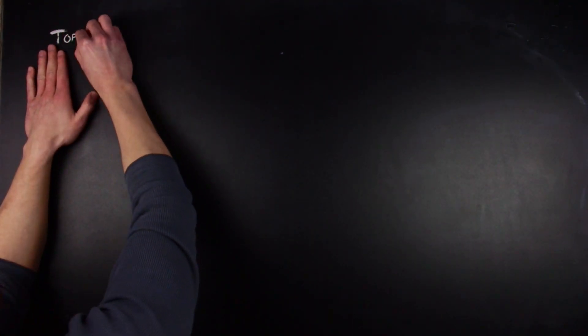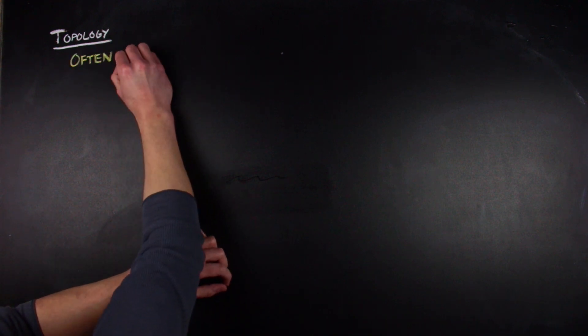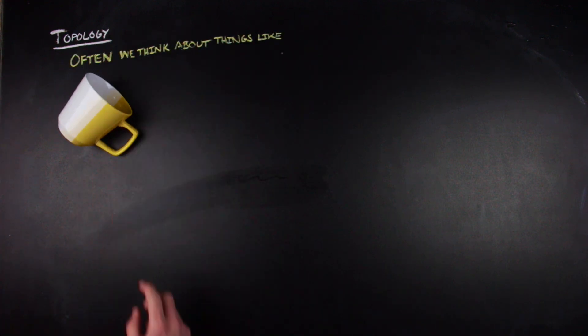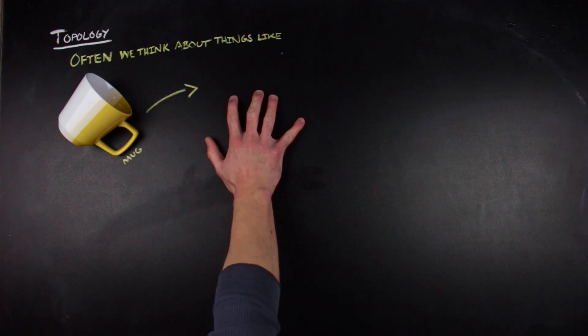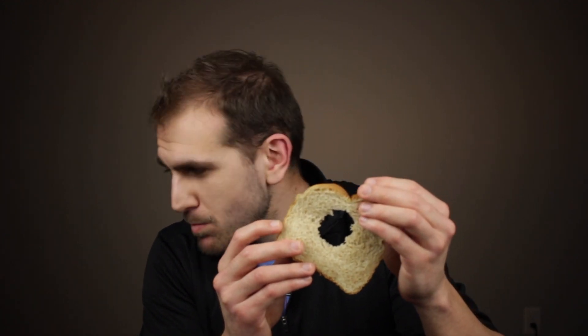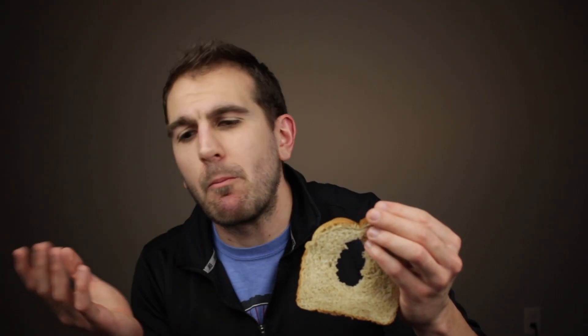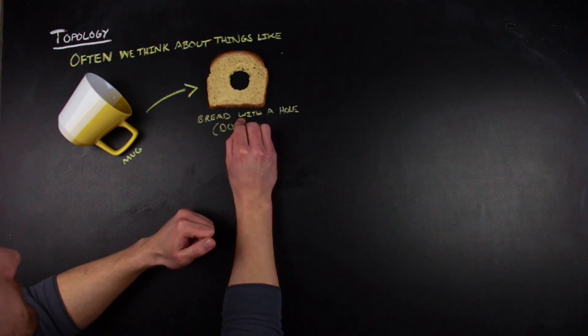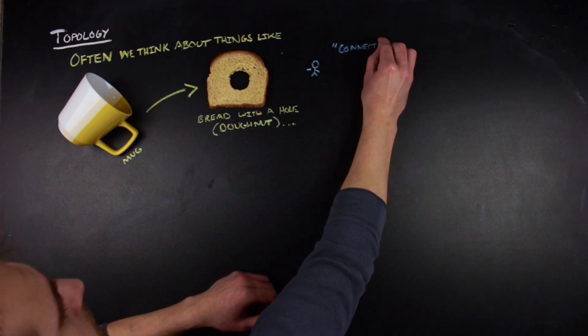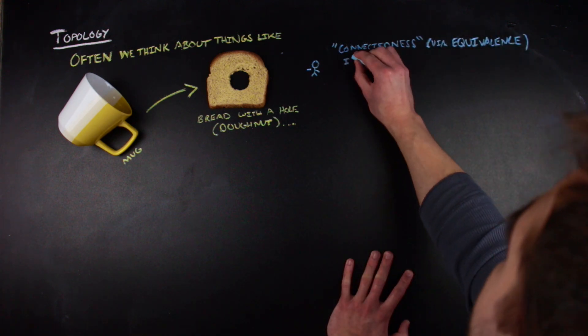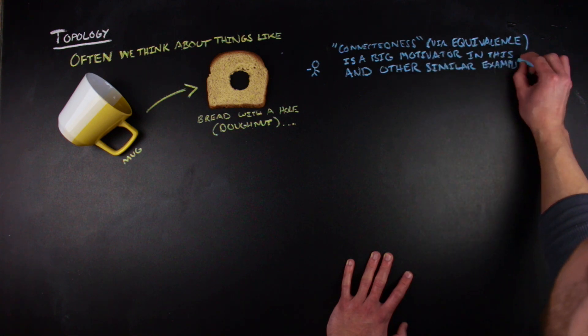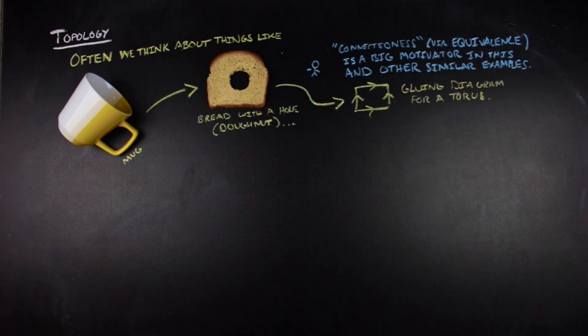Most of the time when people think about topology, or when they're first introduced to topology, they might see something like the mug-to-donut thing. If you're not super sure how that works, there's a nice little animation on the Wikipedia page for a torus. One of the reasons we're talking about this right out the gate is that one of the ways you can formalize the idea of a torus is through looking at some mathematically rigorous way of defining some connection in a space.